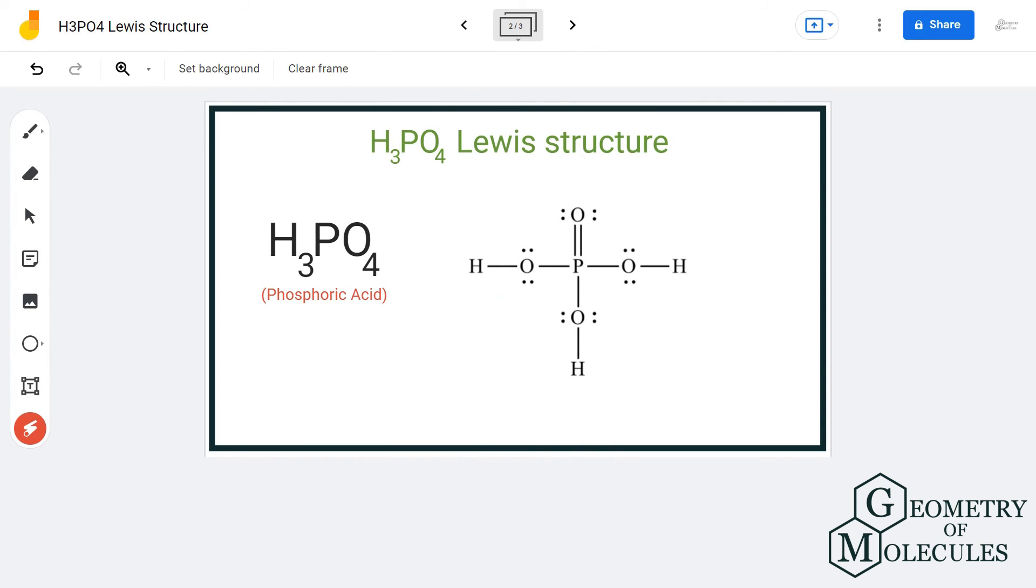The oxygen atom not reacting with hydrogen here has an electron pair to spare, so it can react with the phosphorus atom with a double bond. And hence, now this is the Lewis structure of H3PO4.